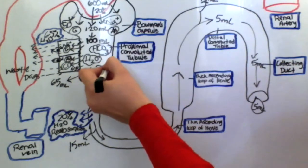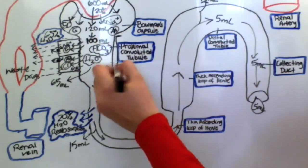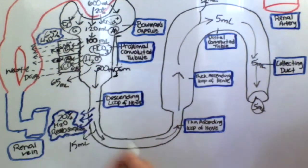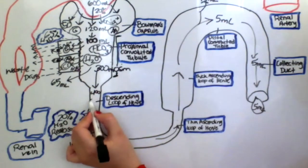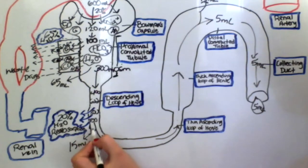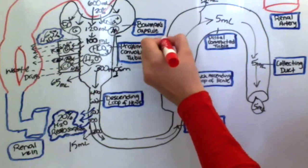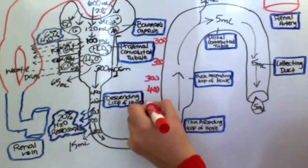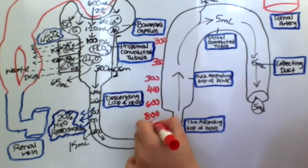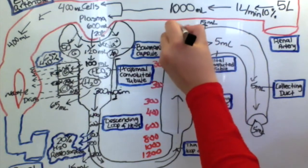The osmolarity of the filtrate remains constant in the proximal convoluted tubule at 300 milliosmoles. However, as the filtrate enters the descending loop of Henle, its concentration or osmolarity increases because the water is leaving due to the interstitium being highly hyperosmolar. As the water leaves, the concentration of the filtrate increases going all the way up to 1200 milliosmoles.